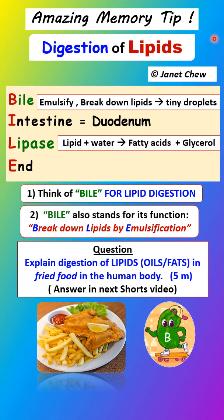Here is another amazing memory tip to help you remember the digestion of lipids in the human body. When you think of lipid digestion, think of the word BILE. B for bile — that's the first substance used in the digestion of lipids — I for intestine, L for lipase, and E meaning there are no other enzymes used to digest lipids except for lipase.